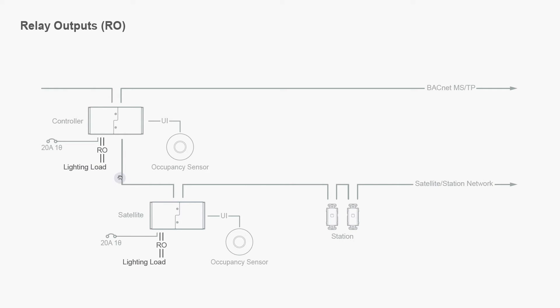Relay outputs, or RO, are featured on both the controller and satellite, and they drive the lighting load. These are relay outputs. Our final network term is universal inputs, or UI. Universal inputs provide an input to the device — in this case we have an occupancy sensor terminated to that universal input. This is universal input.